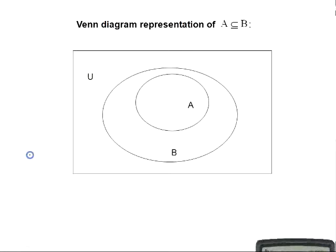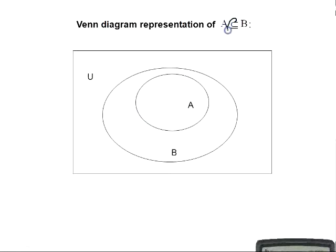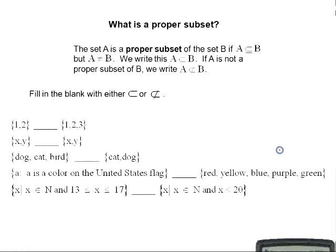Here is a Venn diagram that represents the subset relationship. The rectangle represents the universal set — all elements under consideration. Set B is shown, and contained inside set B is set A, meaning every element of A is also in set B. Therefore, A is a subset of B.